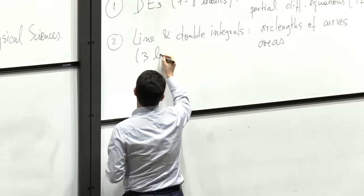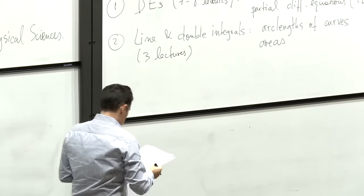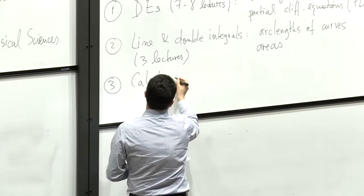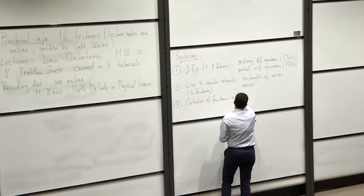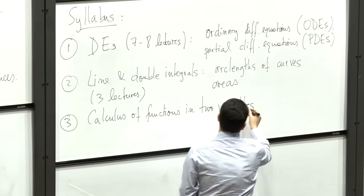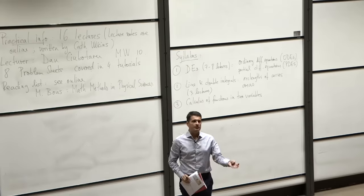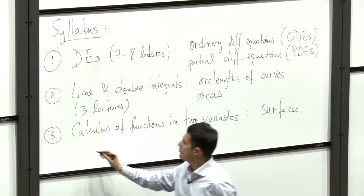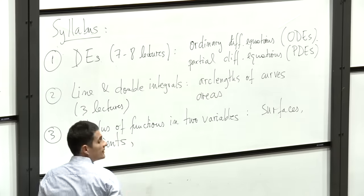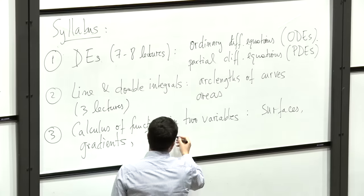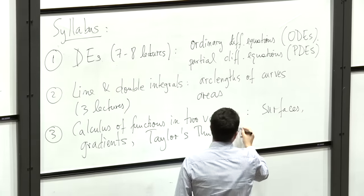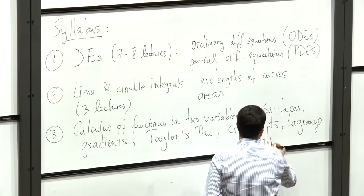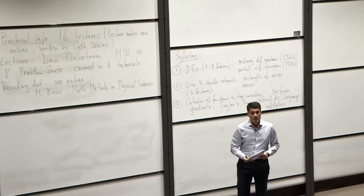The line and double integrals section is maybe three lectures. Finally, we'll do calculus of functions in two variables — a gentle introduction to multivariable calculus. Among the things we'll cover: various surfaces, gradients, normal vectors, Taylor's theorem in two variables, critical points, and a little bit of Lagrange multipliers, which are useful for optimization problems.